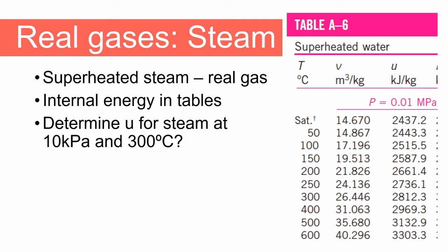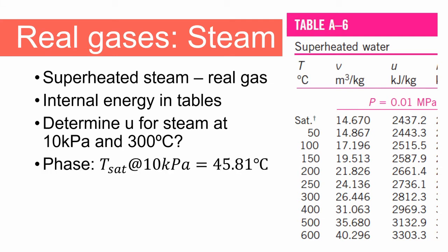First, we need to determine the phase. The saturation temperature of steam at 10 kilopascal is 45.81 degrees Celsius. The given temperature of 300 degrees Celsius is greater than 45.81 degrees Celsius, so the steam is superheated and we can use the superheated steam tables. Reading from the tables of superheated water at 10 kilopascal and 300 degrees Celsius, we get an internal energy of 2812.3 kilojoules per kilogram.